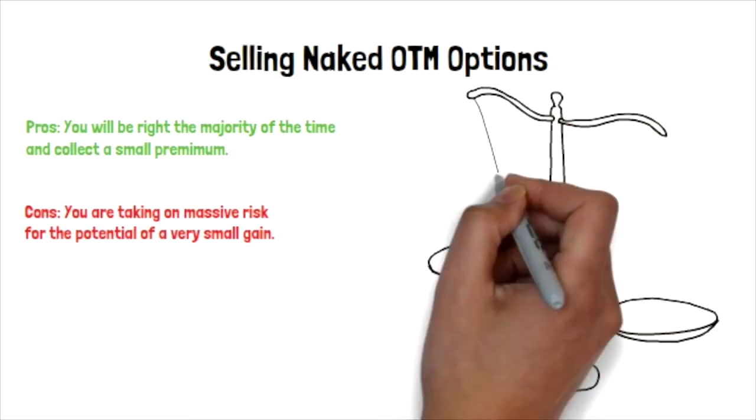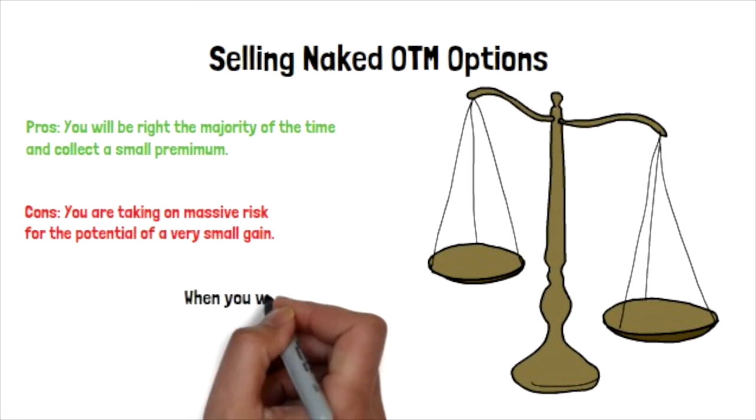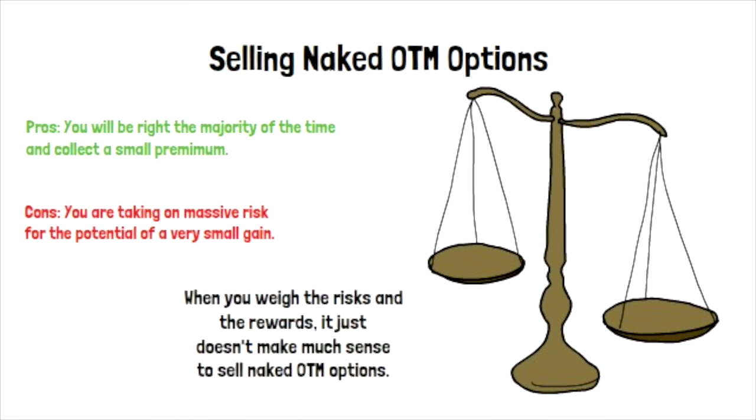Had Mark decided to run a credit spread instead of just selling a naked option, he could have capped his risk. To do this, he would have just needed to buy a call option at a strike above the call option he sold. This would have drastically reduced his profits, but it also would have substantially mitigated his risk.